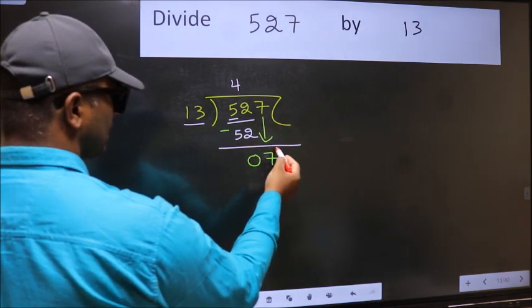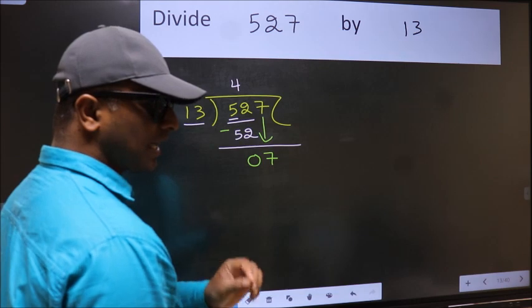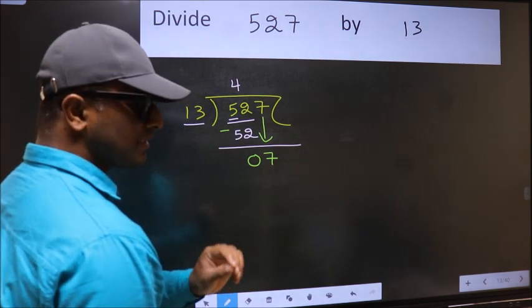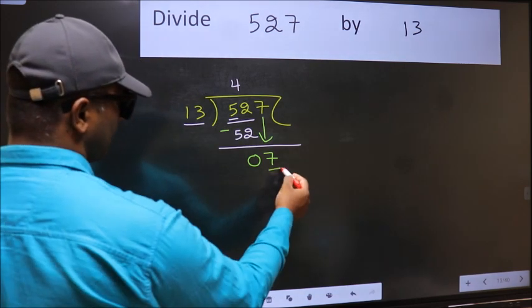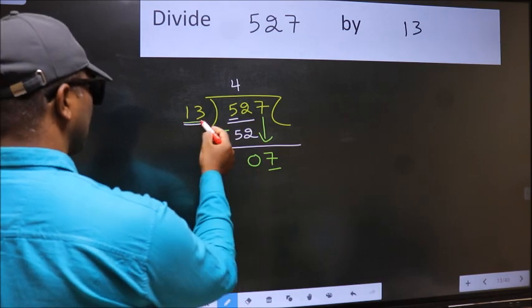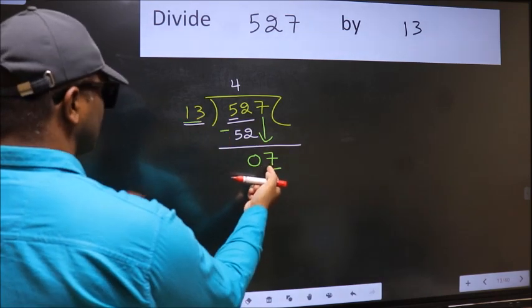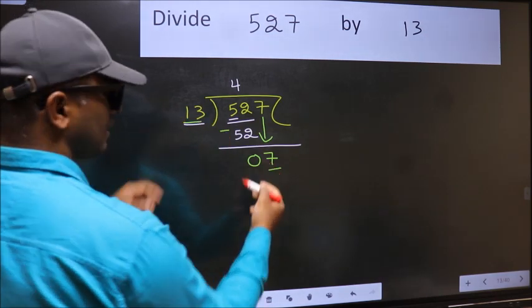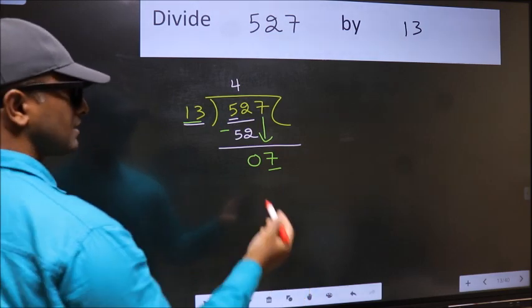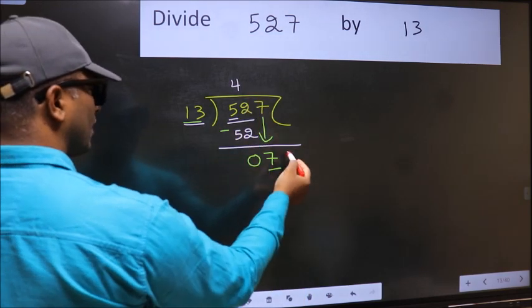After this step, the mistake happens and the mistake is this: here we have 7 and here 13. 7 is smaller than 13, so what many do is they directly put dot, take 0.